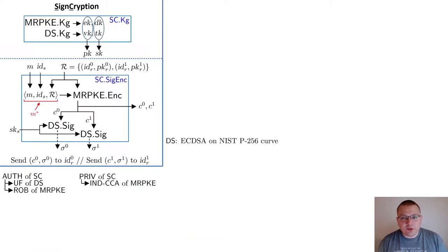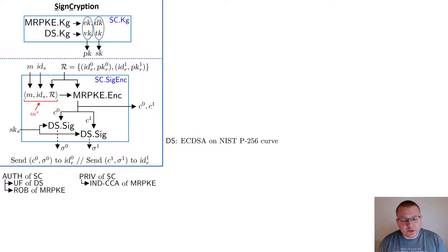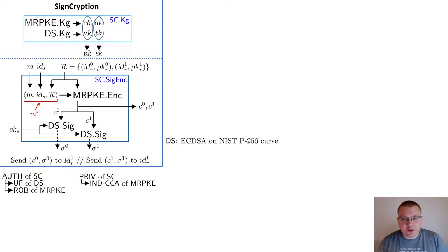We will now revisit the current iMessage design, defining a signcryption scheme that formally captures it in a modular way. Our signcryption scheme is based on a digital signature scheme DS and on a multi-recipient public key encryption scheme MRPKE. The key generation algorithm runs both underlying key generation algorithms and groups the corresponding outputs. The signcryption algorithm creates a payload M* by encoding the plaintext message, the sender's identity, and the set of recipient identities with corresponding public keys. It invokes the MRPKE encryption algorithm to produce a distinct ciphertext for each recipient, where all ciphertexts encrypt the same payload M*. Finally, each ciphertext is independently signed and the resulting signature is combined with the corresponding MRPKE ciphertext.